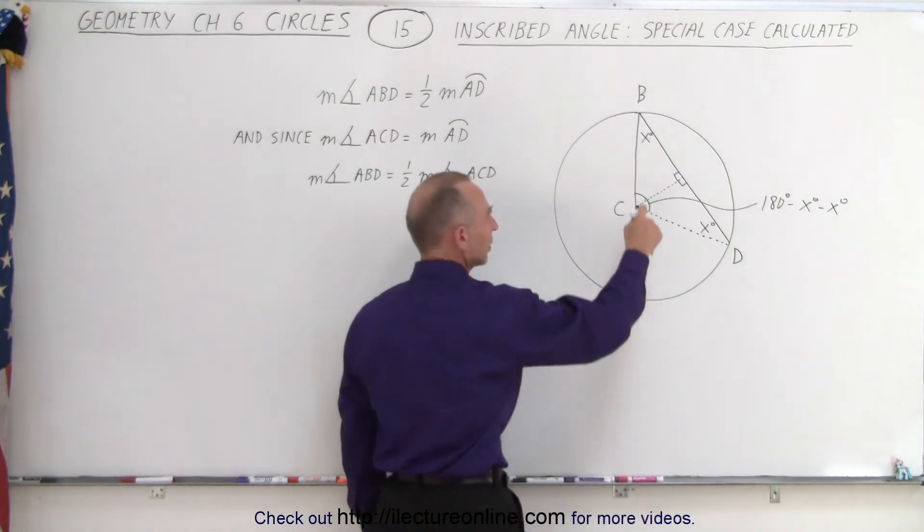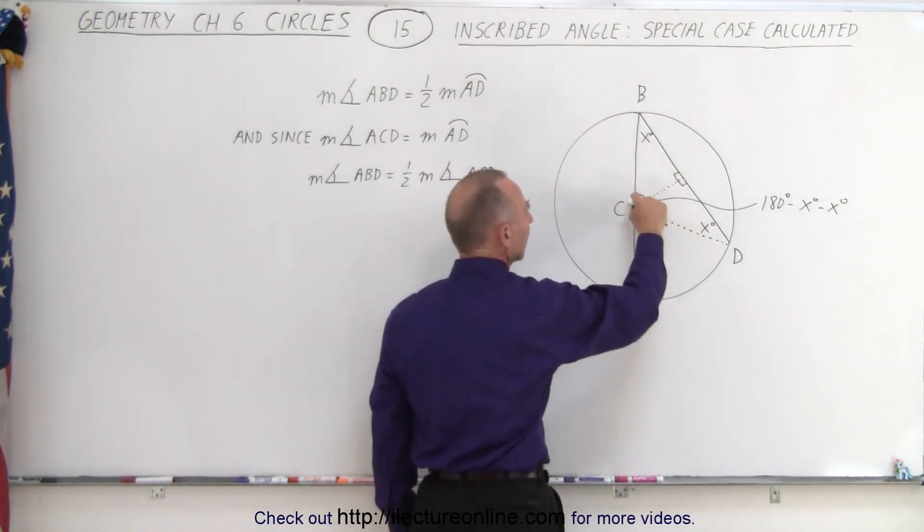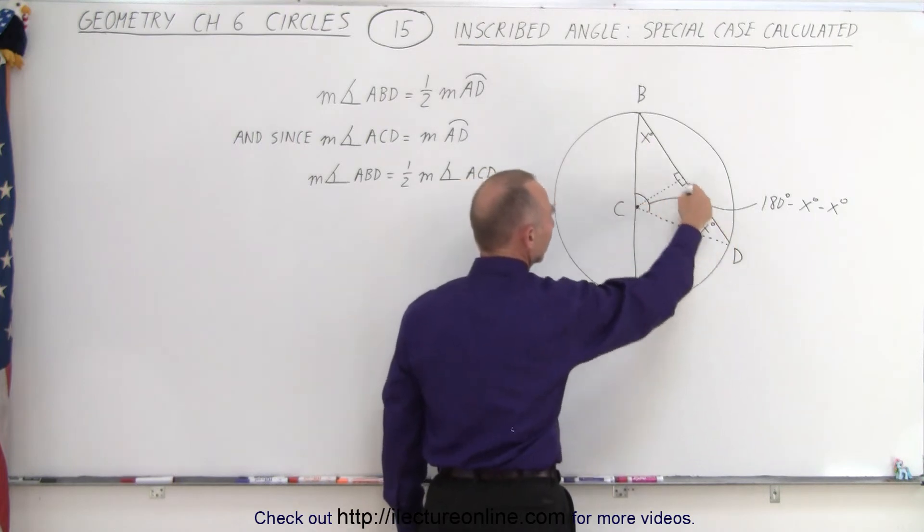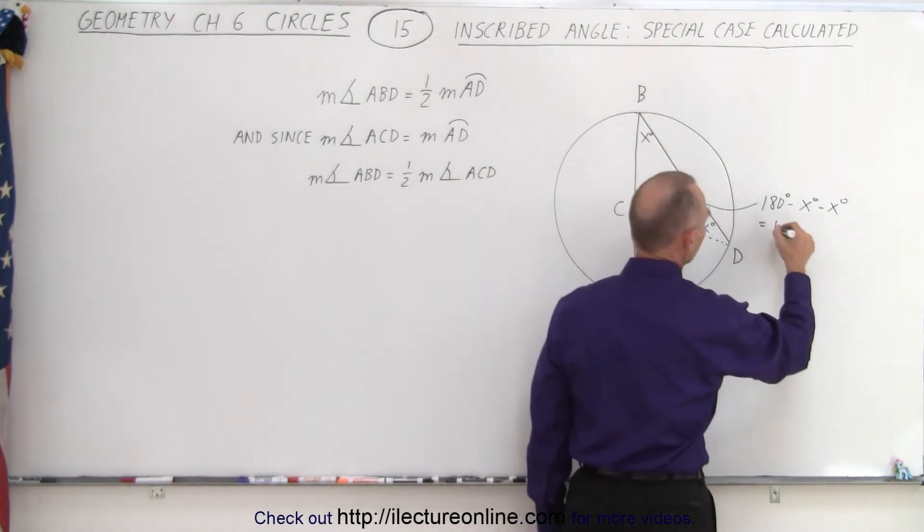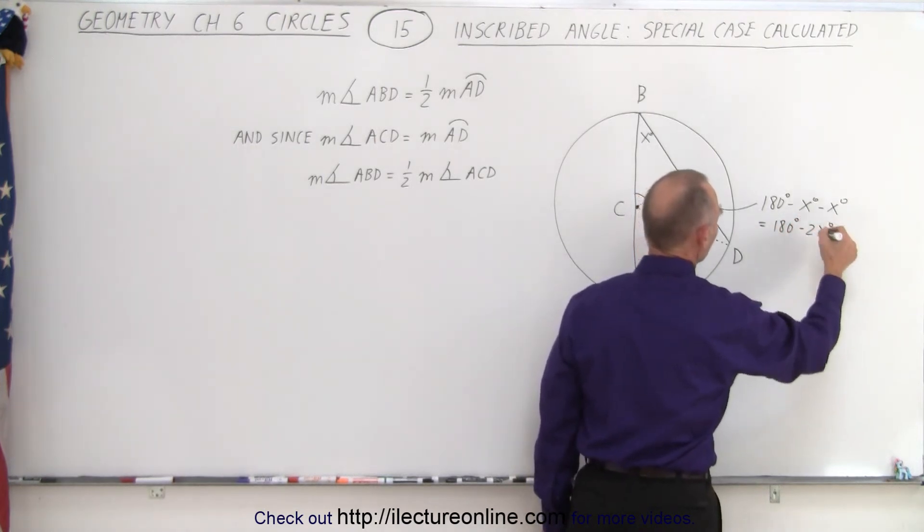Because I subtract these two angles from 180 and I then have the remaining angle if I take a look at this triangle right here. In other words that is equal to 180 degrees minus 2x degrees.